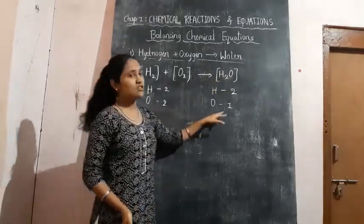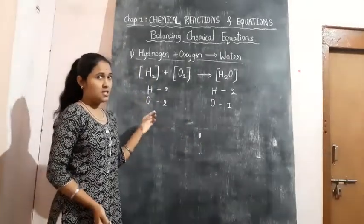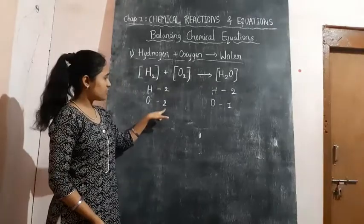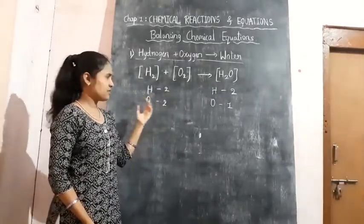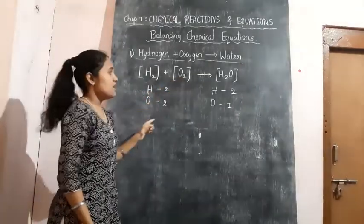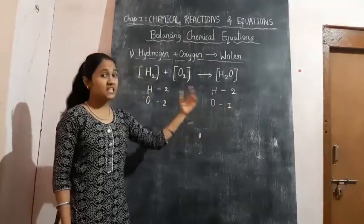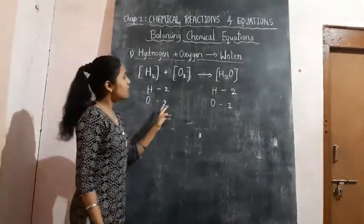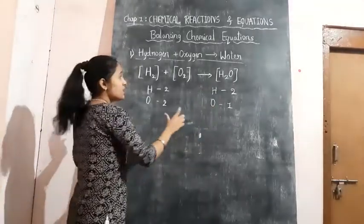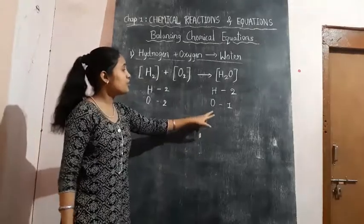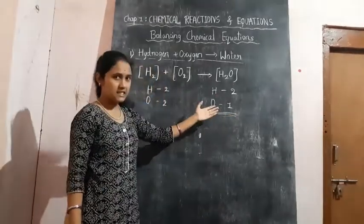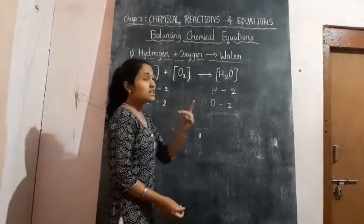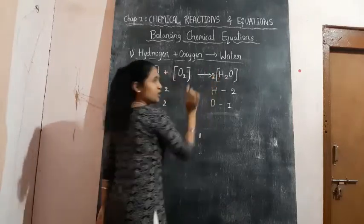Oxygen is 2 on the reactant side and 1 on the product side. Another important rule: we cannot reduce the number of atoms in any reaction, but we can increase the number. Since oxygen is 2 on the reactant side, we cannot reduce it to 1 — we need O₂. On the product side, oxygen is 1, and we can increase it. The less number is on the product side, so we balance there. We need to make it 2H₂O — changing 1H₂O to 2H₂O.